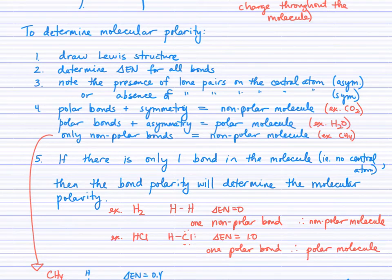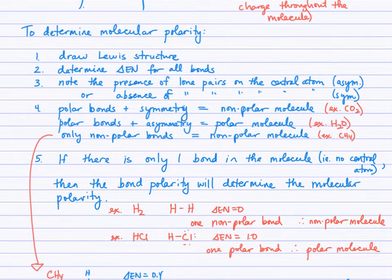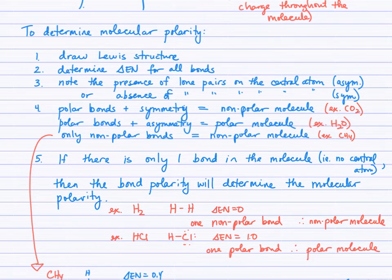I've summarized in steps how to determine molecular polarity. When you study molecular shape in grade 12, we'll add vectors of bond dipoles to determine the molecular dipole. For now, draw a Lewis structure and determine bond polarity by finding the electronegativity difference, then note the presence or absence of lone pairs on the central atom. If there are lone pairs, the molecule is asymmetrical; if there are none, it's symmetrical. Polar bonds plus symmetry gives a nonpolar molecule; polar bonds plus asymmetry gives a polar molecule. Nonpolar bonds give a nonpolar molecule.